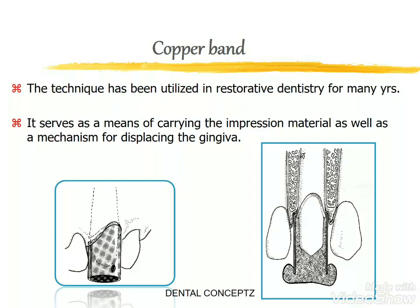The copper band technique has been utilized in restorative dentistry for many years. It serves as a means of carrying the impression material as well as a mechanism of displacing the gingiva. With copper band, we can use impression compound or elastomeric impression material.